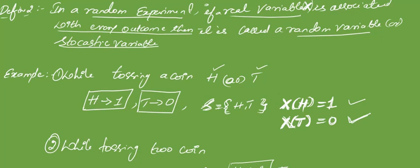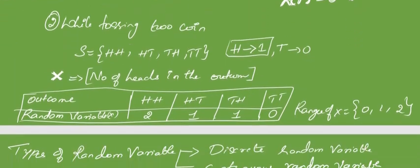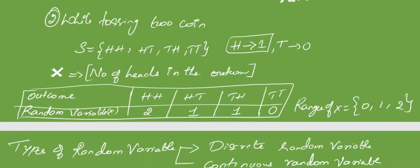It is a random experiment — tossing of a coin — and we are assigning a real variable capital X, associated to each outcome of our trial. To understand better, we have one more example. Instead of tossing one coin, we will take an example of tossing two coins. When two coins are tossed, we obviously have four possible outcomes: head-head, head-tail, tail-head, tail-tail.